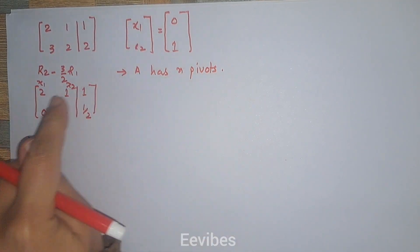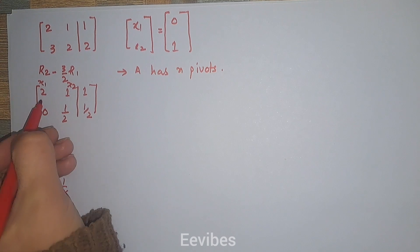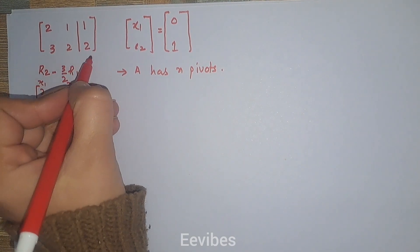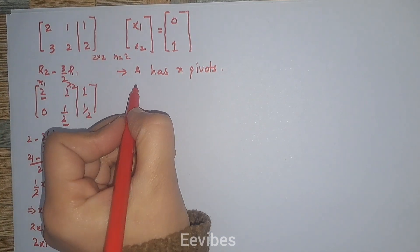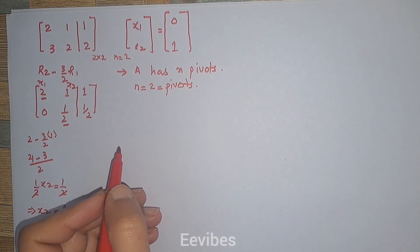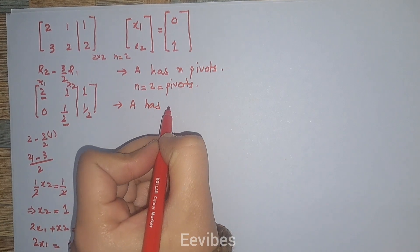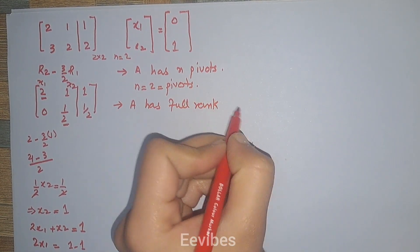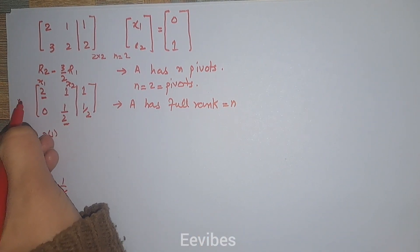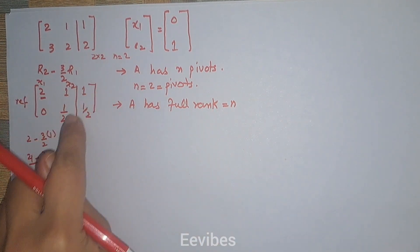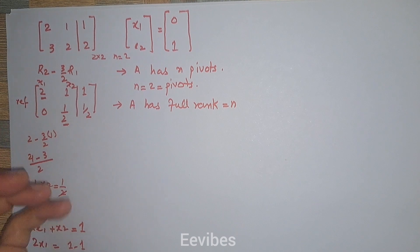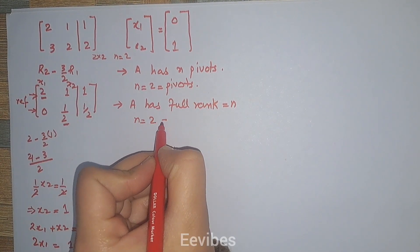The next property is that A has n pivots. To find the pivots, we perform the RREF of the matrix. The first non-zero entry in the first column and the first non-zero entry in the second column are the pivots. Since the order of this matrix is 2×2, n = 2, which equals the number of pivots. The next property is that A has full rank, meaning rank = n. The number of non-zero rows after performing RREF equals the number of columns, which here is 2.